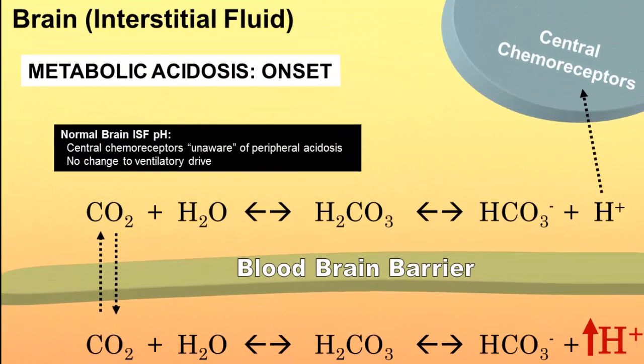However, at this onset, the central chemoreceptors are unaware of this pH challenge out in the periphery, and that's because they are insulated by the blood-brain barrier. Movement of bicarbonate, protons, and many other substances between the blood and the brain interstitial fluid is regulated by the blood-brain barrier and the blood-CSF barrier. Because of the blood-brain barrier, the central chemoreceptors do not detect the decrease in blood pH, that is, the acidemia.